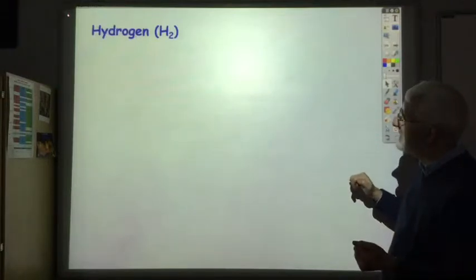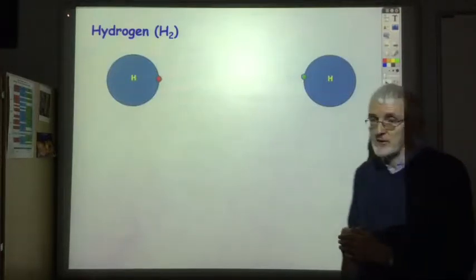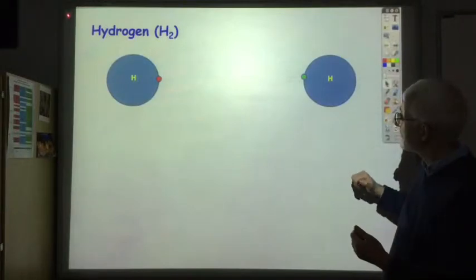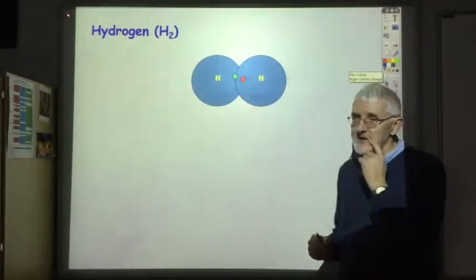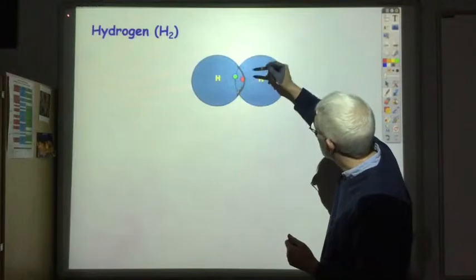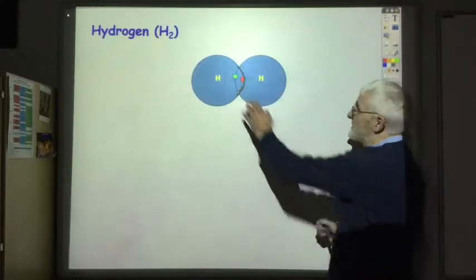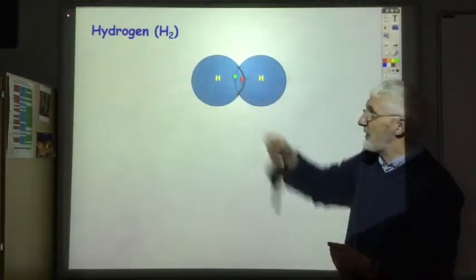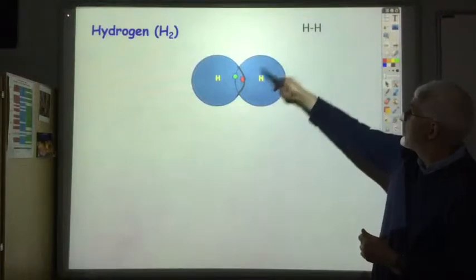The hydrogen molecule H2 is the easiest example. Each hydrogen atom has just one electron, and it will have a full outer shell if it had two, so they decide to share those two electrons. These two electrons are in a shared area between the two atoms, so each atom can now see two electrons - they've got a full outer shell. That shared pair of electrons is a covalent bond, represented by a line in diagrams.